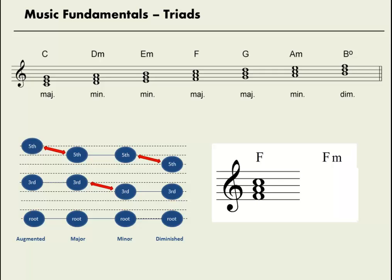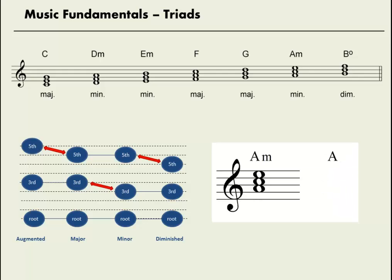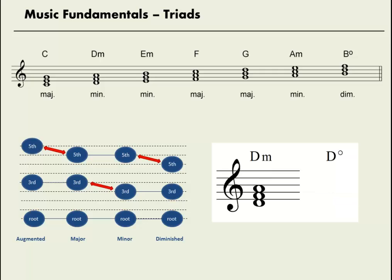How about F minor? F A C is major, but what's the difference between major and minor? The third. So if we lower the third, F A flat C — we know that's F minor. How about A major? A C E, the white note spelling for A is minor, and so we know we have to raise the third. So A, C sharp, E is major. How about D diminished? If we start with D minor — D F A — to get from minor to diminished, we have to lower the fifth, and so D F A flat. If we know the white note spellings and we know the relationship between the triad types, we can use those two pieces of information to quickly and efficiently spell any chord.